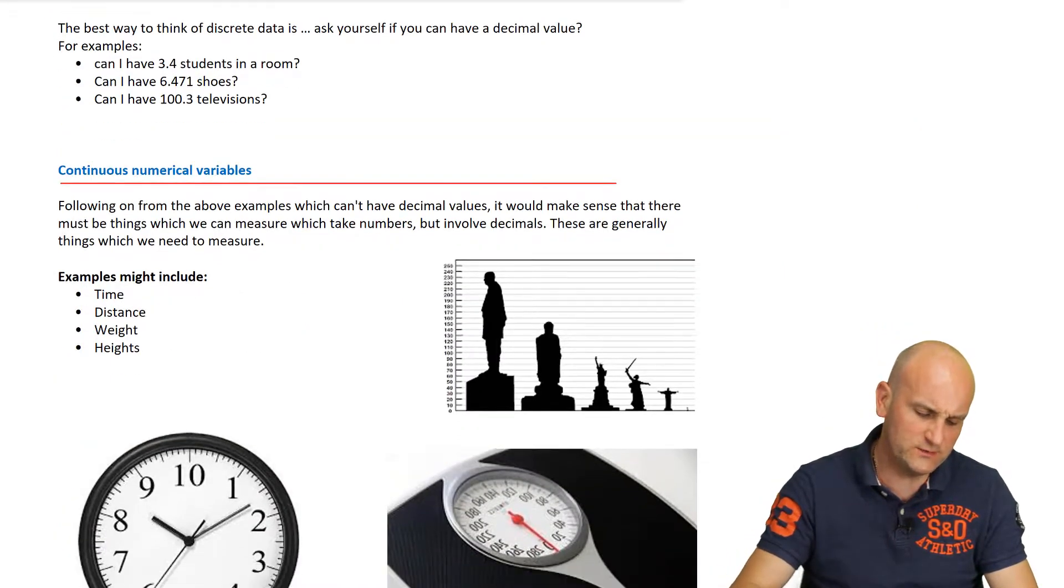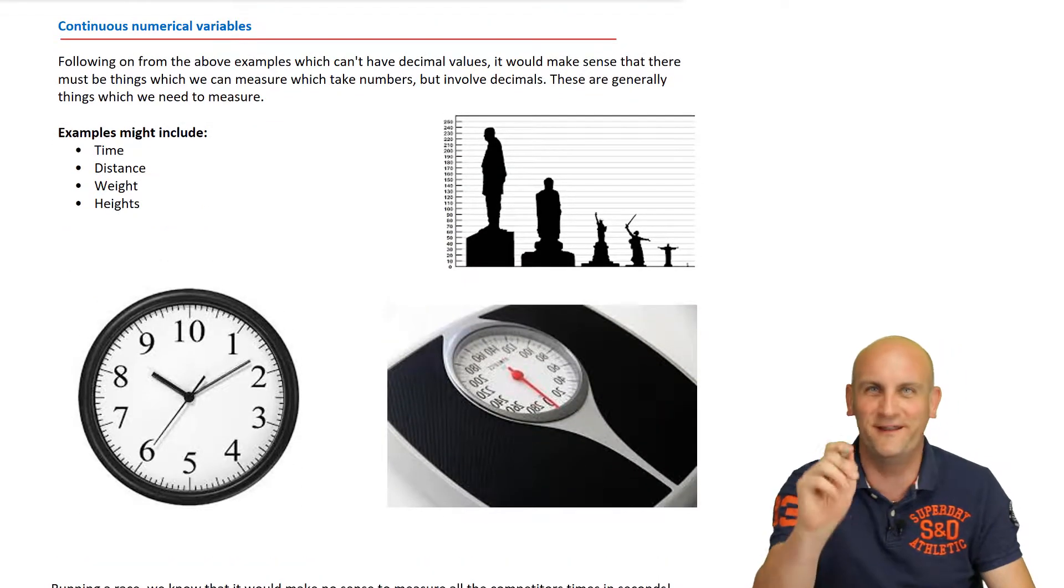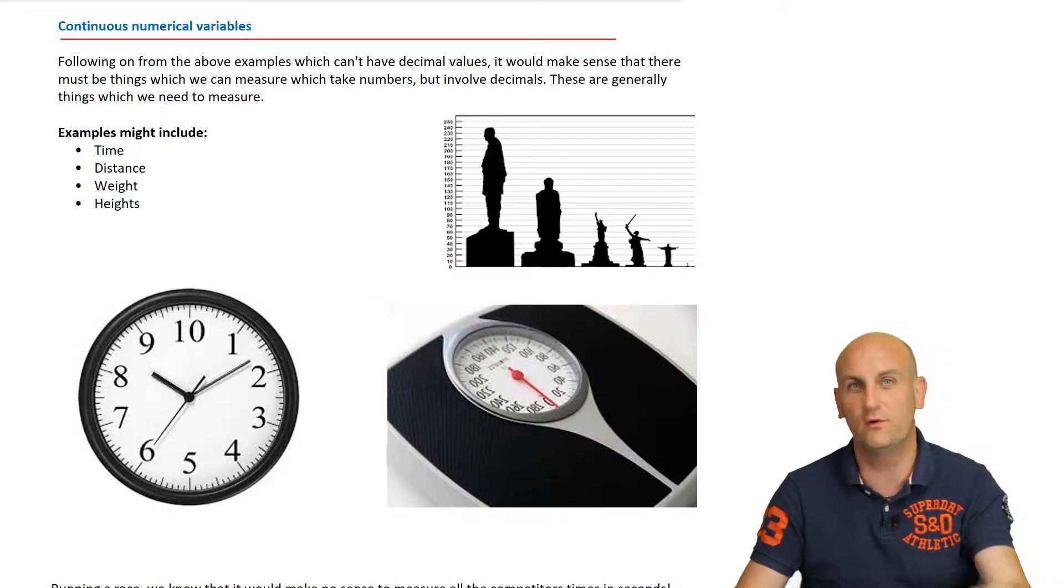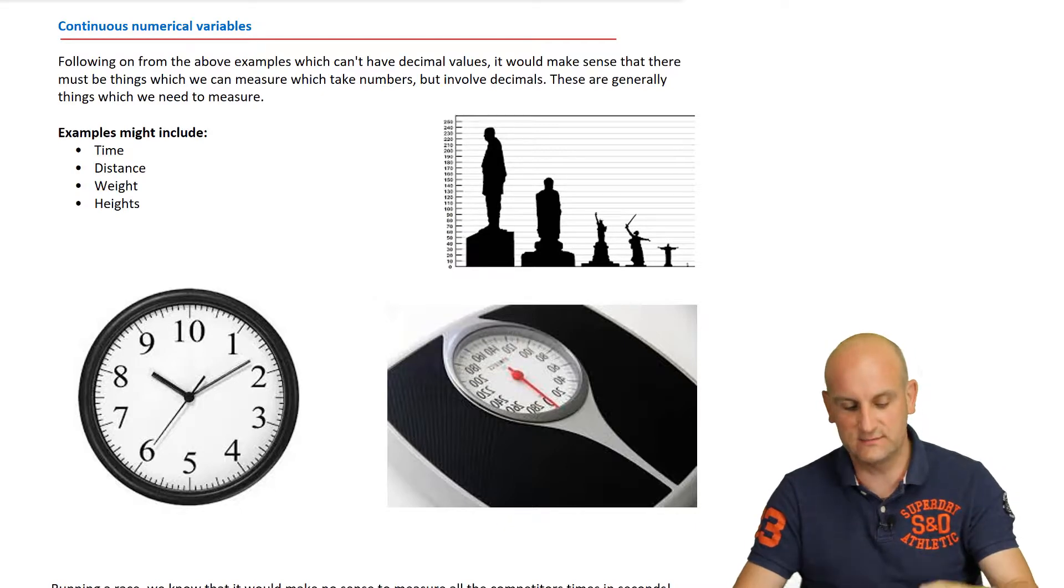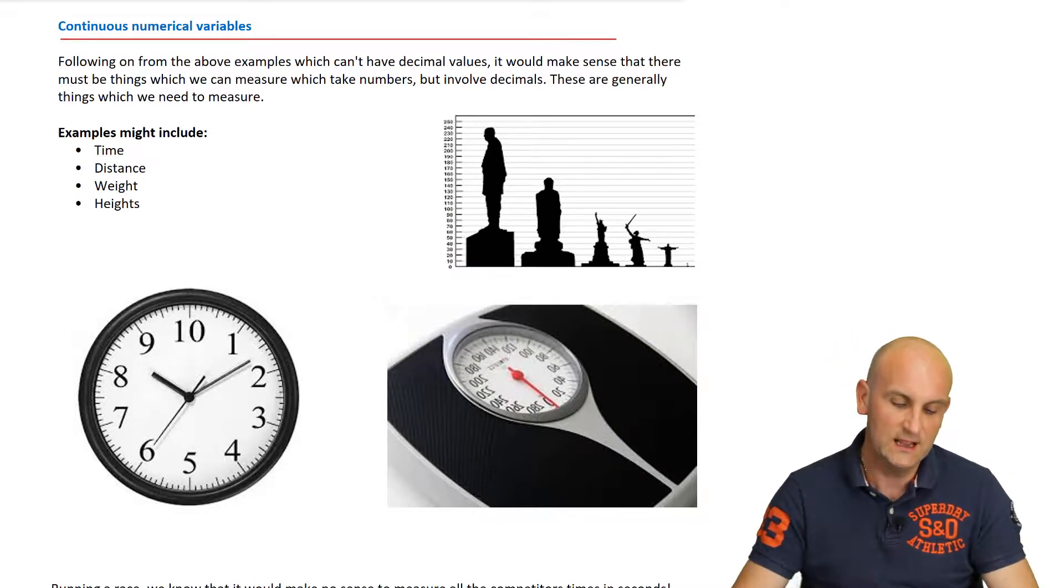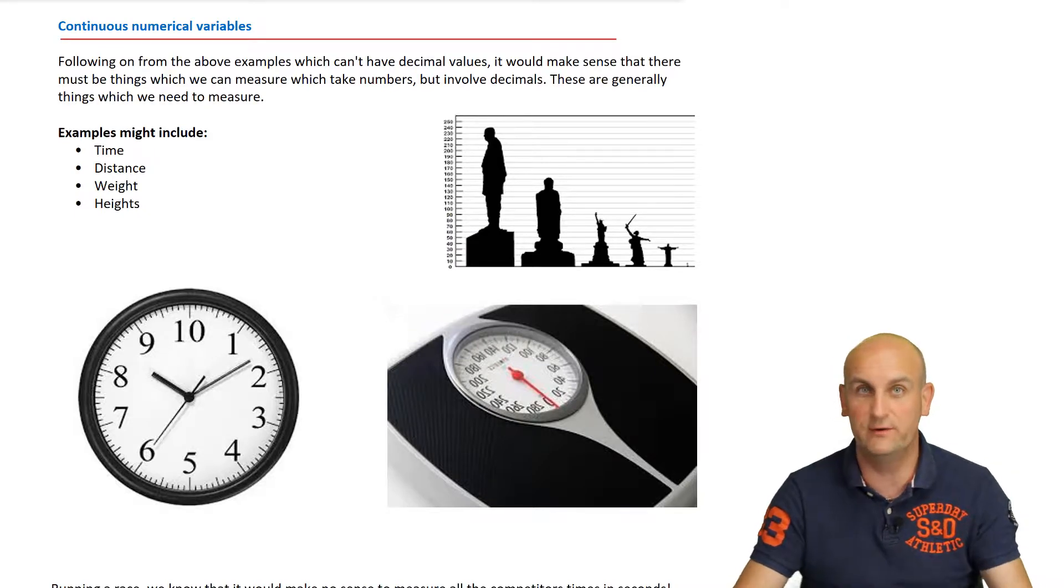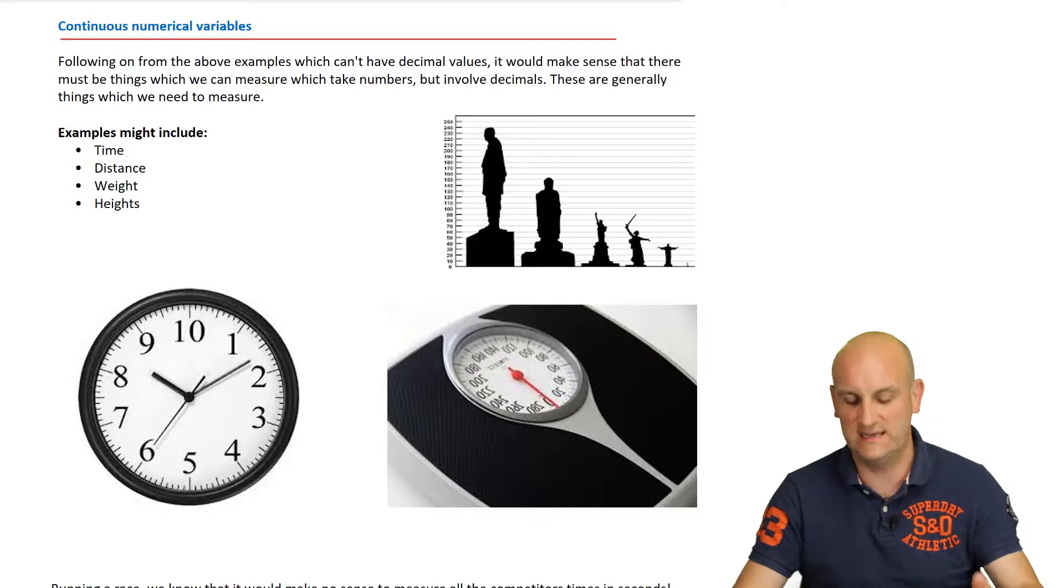Then we move on to continuous numerical variables, and you're going to say, well, hold on a moment, I know this thing. And of course you do. If we have discrete can take whole numbers only, then continuous numerical variables can actually take decimal values. Yes, these are things that can be measured again, but with decimal values. Let's think about this. Time can be measured with decimal values. I can have 3.6 seconds. Distance, I can have a distance measured in decimal values. I can have weight, I can have height, all of these measured in decimal values.